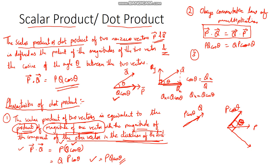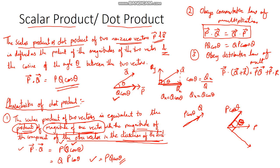The third characteristic is that the scalar product also obeys the distributive law of multiplication. So if we have vector p multiplied by (q + r), we can open the bracket and write it as p dot q + p dot r. This is the distributive law of multiplication.